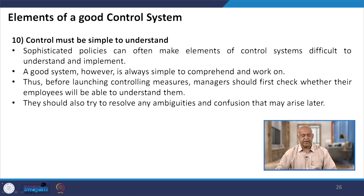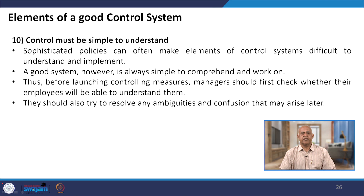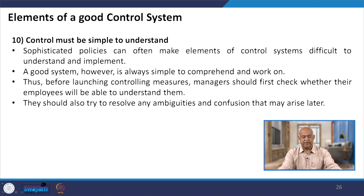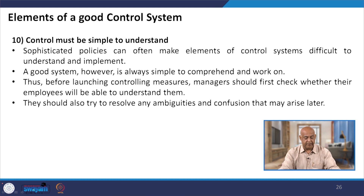This is the whole aim of strategic control points. Control must also be simple to understand — sophisticated policies can make elements of the control system difficult to understand and implement. A good system is always simple to comprehend and work with. Before launching control measures, managers should first check whether their employees will be able to understand them and resolve any ambiguity or confusion.